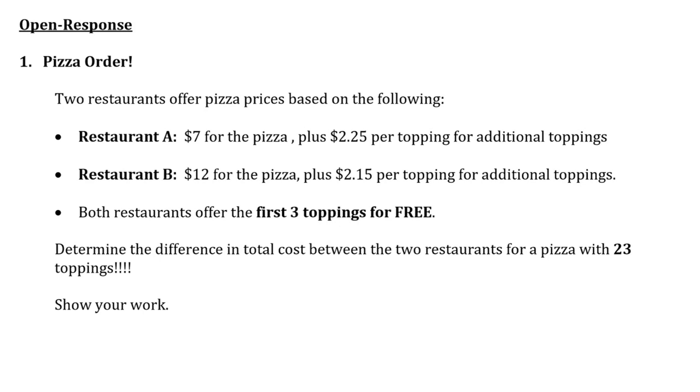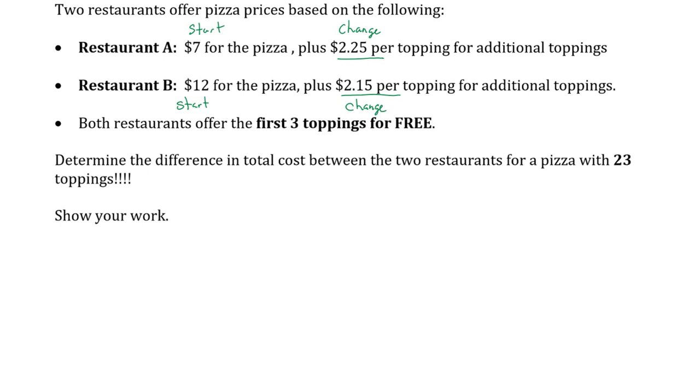Let's take a look at one open response. A pizza order. Two restaurants offer pizza prices based on the following. Restaurant A is $7 for the pizza and $2.25 per topping. So there's your change and there's your start. Restaurant B is $12 for the pizza plus $2.15 per topping. $2.15 per topping is my change. $12 is my start. And I really hope we're starting to see that word 'per' or 'each' is really important. And the other one is a flat fee, a fixed fee, an initial fee. And hopefully we can recognize that in the language as well. Tricky. Both restaurants offer the first three toppings for free. Determine the difference in total cost between the two restaurants for a pizza with 23 toppings on each pizza. Show your work.